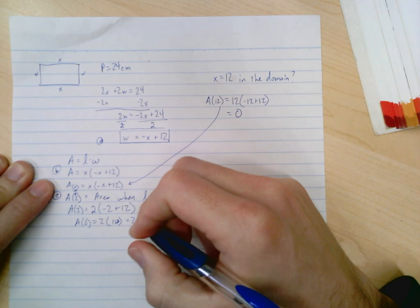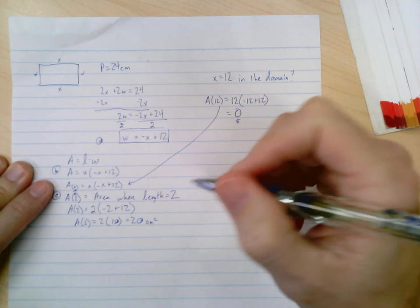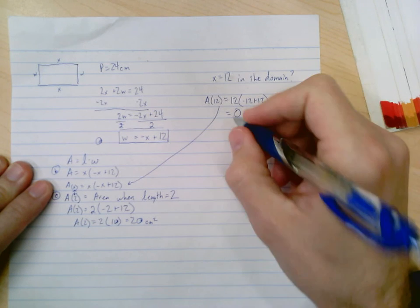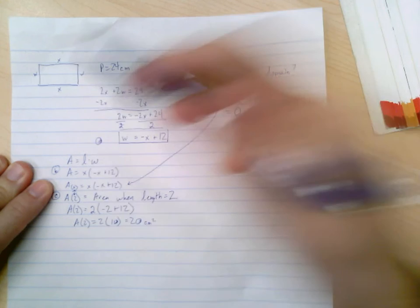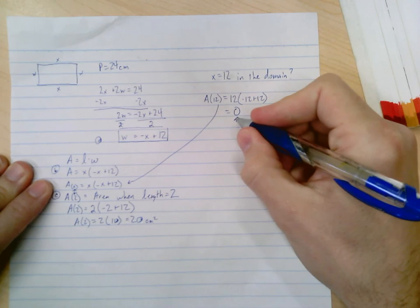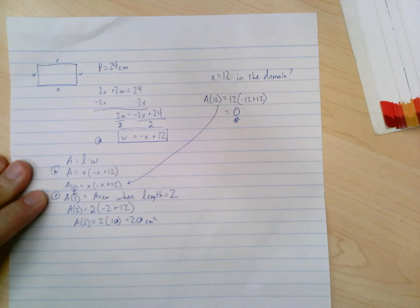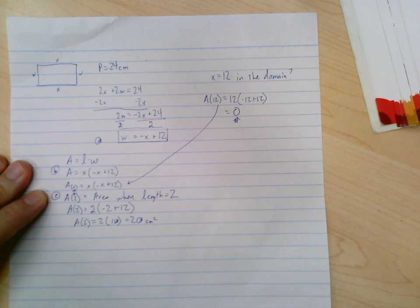Alright, so the answer to part d: no, x equals 12 is not in the domain because it gives me a non-viable answer, alright, or because if the length was 12, the width would have to be zero. Alright, and that's it. So that would be question number two in exercise E. Alright, go on to the next video if you want to see the next one.